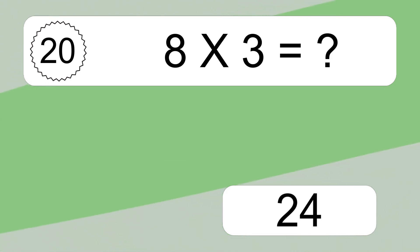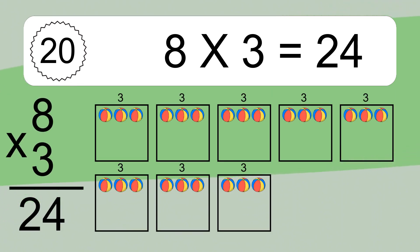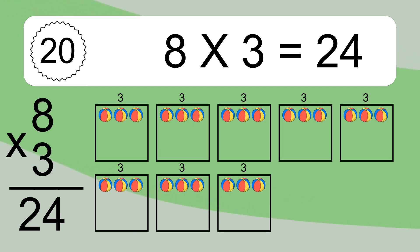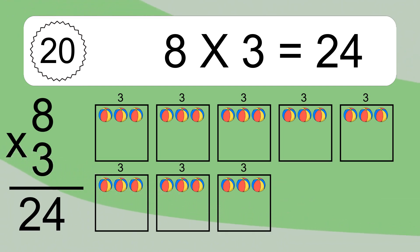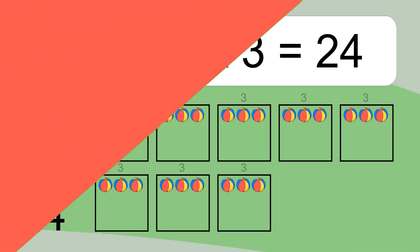8 times 3 equals what? 8 times 3 equals 24. We have 8 boxes, and each box has 3 colorful balls inside. If you count all the balls in all the boxes together, you will have 8 times 3 balls. This equals 24 balls.